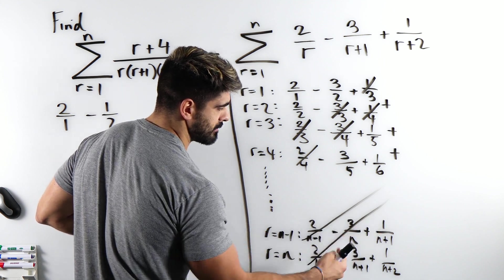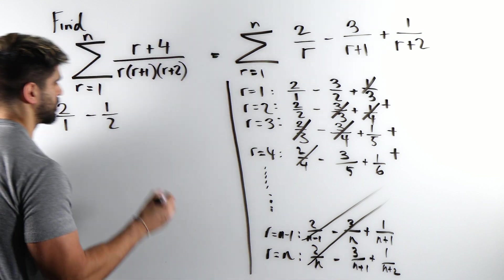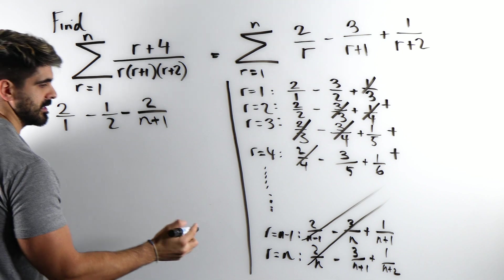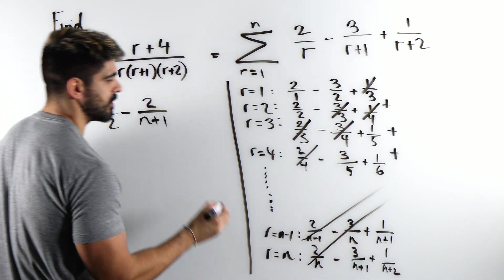Here looking at the diagonals, minus 3 plus 1 is minus 2 over n plus 1. And then finally we got plus 1 over n plus 2.